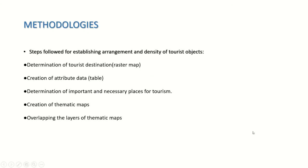Methodologies include steps for establishing the arrangement and density of tourist objects: determination of the tourist destination as a raster map and creation of attribute data tables, determination of important and necessary places for tourism, creation of thematic maps, and overlapping the layers of thematic maps.